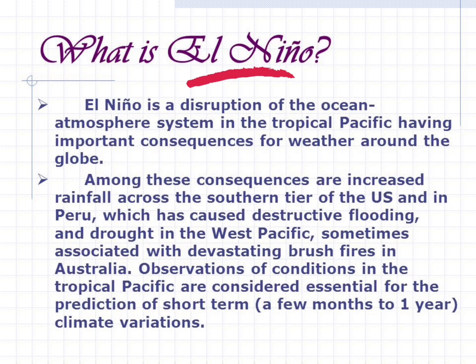El Niño is a disruption of the ocean-atmosphere system in the tropical Pacific having important consequences for weather around the globe. Among these consequences are increased rainfall across the southern tier of the U.S. and in Peru, which has caused destructive flooding, and drought in the west Pacific sometimes associated with devastating brush fires in Australia. Observations of conditions in the tropical Pacific are essential for the prediction of short-term climate variations.